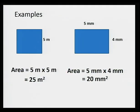Let's look at these examples. In the first example, we have a square of length 5 m. The area is equal to 5 m times 5 m, equal to 25 m². If the dimensions are in meters, the area will be in meters squared. In the second example, we have a rectangle of length 5 mm and width 4 mm. The area is equal to 5 mm times 4 mm, equal to 20 mm².